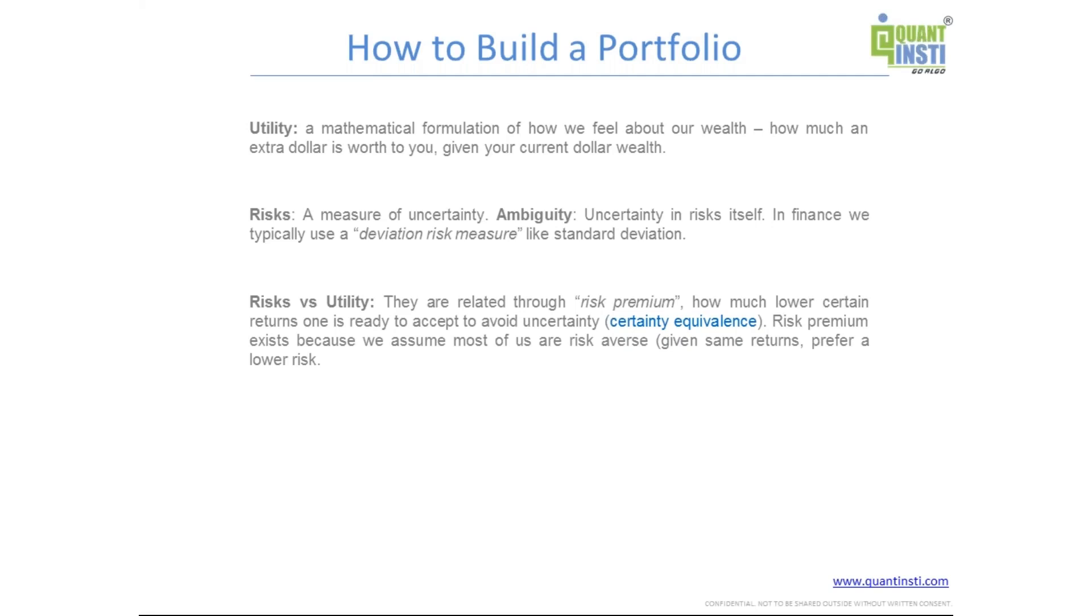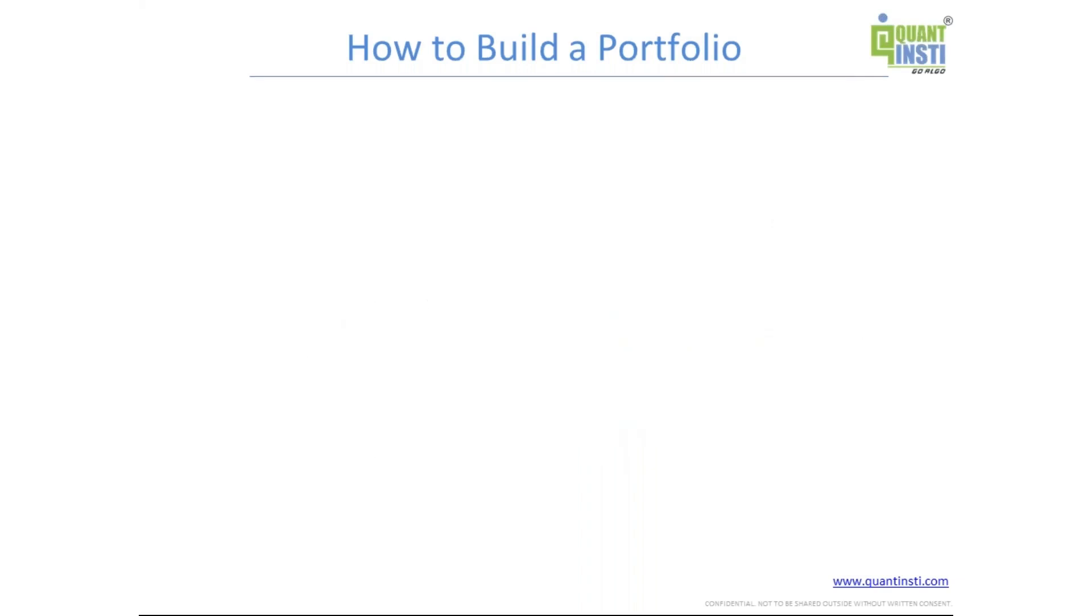So the difference between the expected payout of the second game and the amount that one will settle for with the first option, that certain payment, that difference is called the risk premium. For example, if most investors in the economy are indifferent between a 2% per annum rate for certain returns like a bank deposit or treasury bill, or compared to an expected 8% return from a broad equity market where it can go up to say 16% or go negative as well - if people are indifferent between these two choices, that means the risk premium in the market with respect to that particular investment, that is equity, is eight minus three, that is 5%.